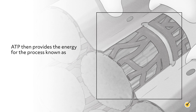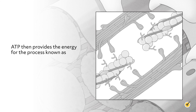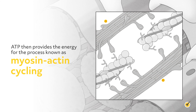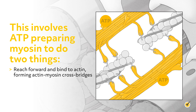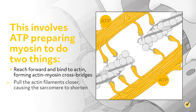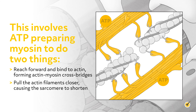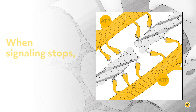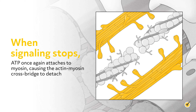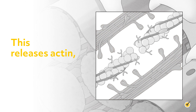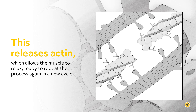Number three: ATP then provides the energy for the process known as myosin-actin cycling. This involves ATP preparing myosin to reach forward and bind to actin, forming actin-myosin cross bridges, and pull the actin filaments closer, causing the sarcomere to shorten. When signaling stops, ATP once again attaches to myosin, causing the actin-myosin cross bridge to detach. This releases actin, which allows the muscle to relax, ready to repeat the process again in a new cycle.